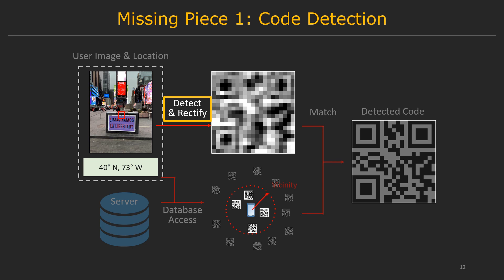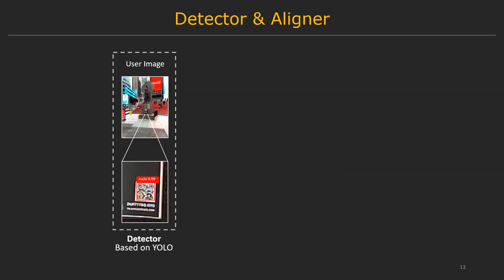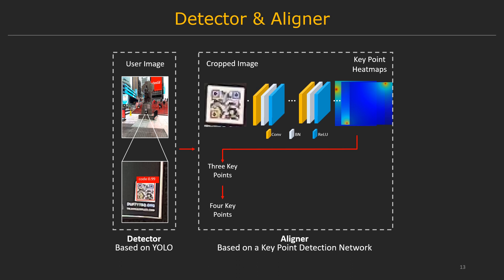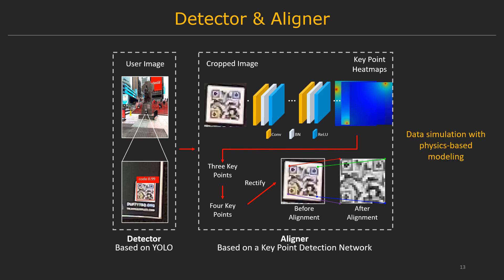We still have two missing pieces in this pipeline. First, how do we detect the code? Our detector module is based on YOLO, a widely used object detection network, which gives a bounding box of the code. Then we have an aligner module based on a keypoint detection network. It predicts the precise locations of the four corners and applies a geometry transform to map the code from a tilted shape to a rectified square shape. Both models are trained with simulated images of QR codes, using a physics-based model of the imaging process so they work well on real images.